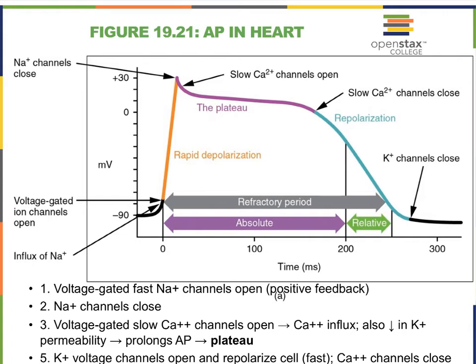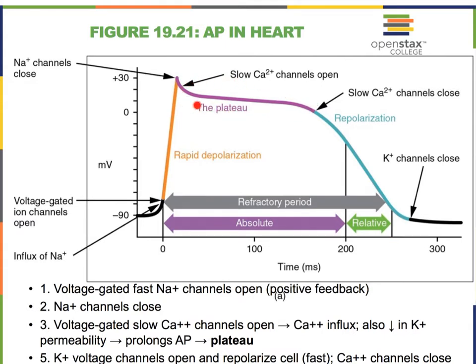Here we're looking at the action potential in the contractile cells of the heart. Make sure you're keeping track: we're just focusing on the contractile cells, which make up the majority of cardiac muscle cells. Right away you notice the plateau, which is very different from the action potential in skeletal muscle, where we reach a peak and then immediately come back down.